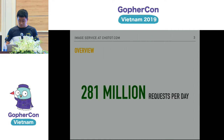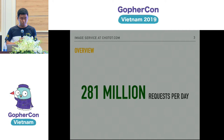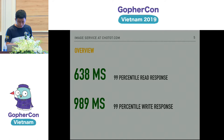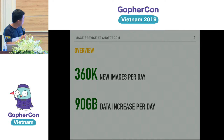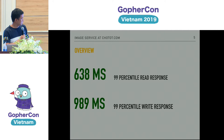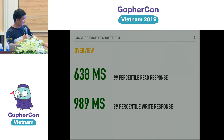Some metrics about the service: our image service can handle nearly 200 million requests per day. Each day we have nearly 360,000 new images and 90 gigabytes of data increase in our storage. 99% of read request response times are less than 600 milliseconds, and 99% of upload request response times are less than one second.